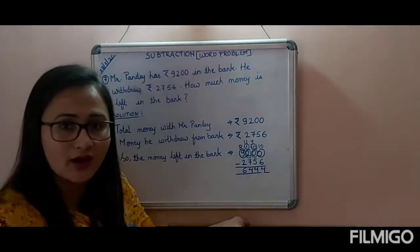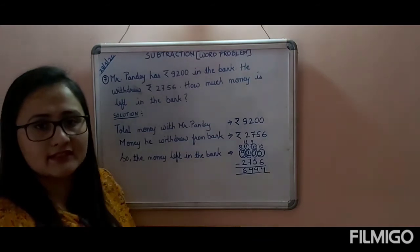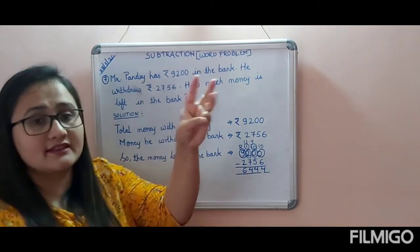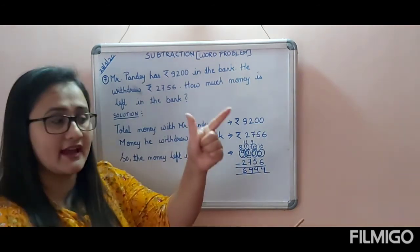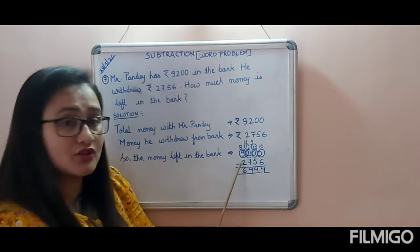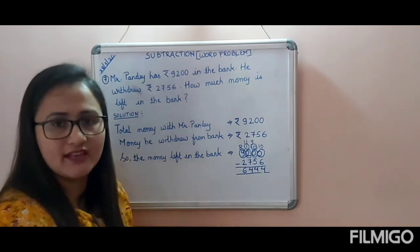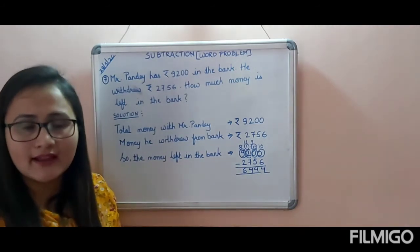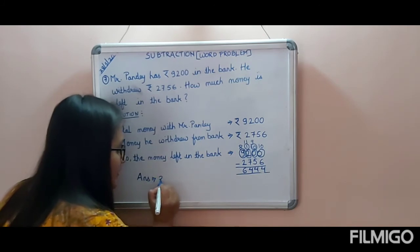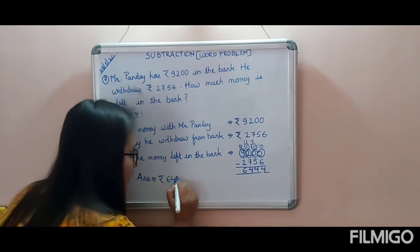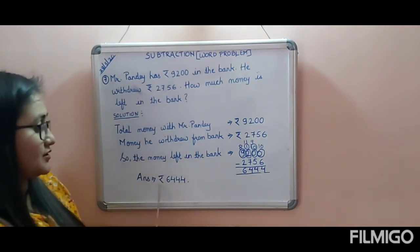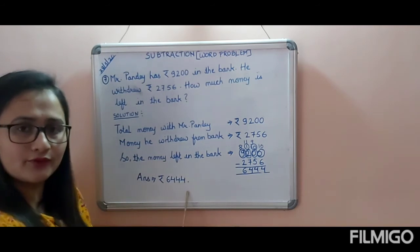Now let me teach you the trick to check your answer. 6 plus 4 equals 10 — correct. 4 plus 5 equals 9 — correct. 4 plus 7 equals 11 — correct. 6 plus 2 equals 8 — correct. Your answer is absolutely right! This way you will not lose marks in subtraction. So the money left in the bank is rupees six thousand four hundred and forty-four.